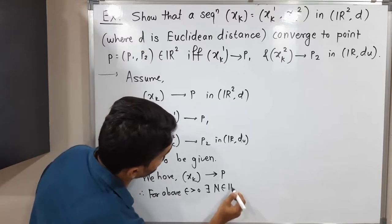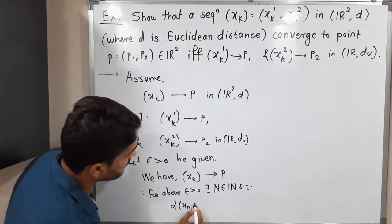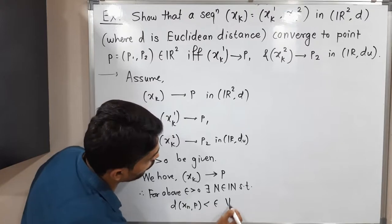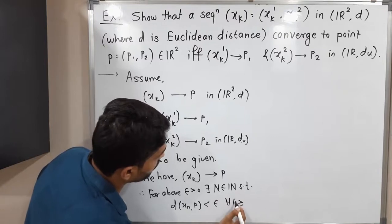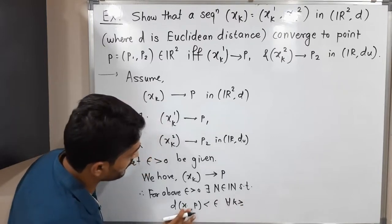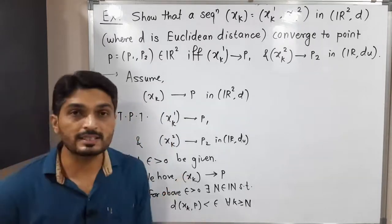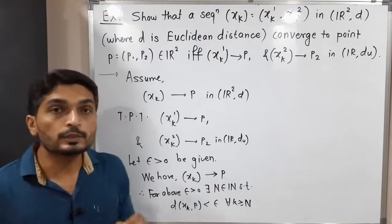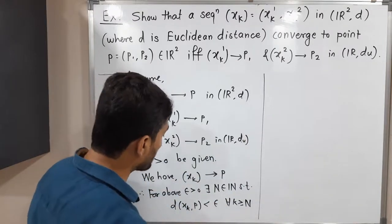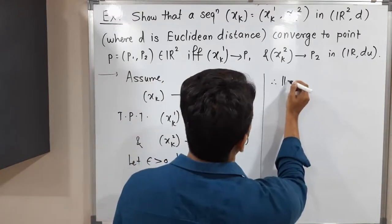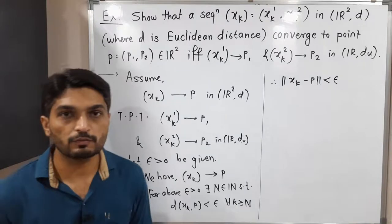There exists N in the natural numbers such that d(xk, p) less than epsilon for all k greater than or equal to N. Since d is the Euclidean metric, d(xk, p) is defined as the norm of xk minus p, which is less than epsilon for all k greater than or equal to N.